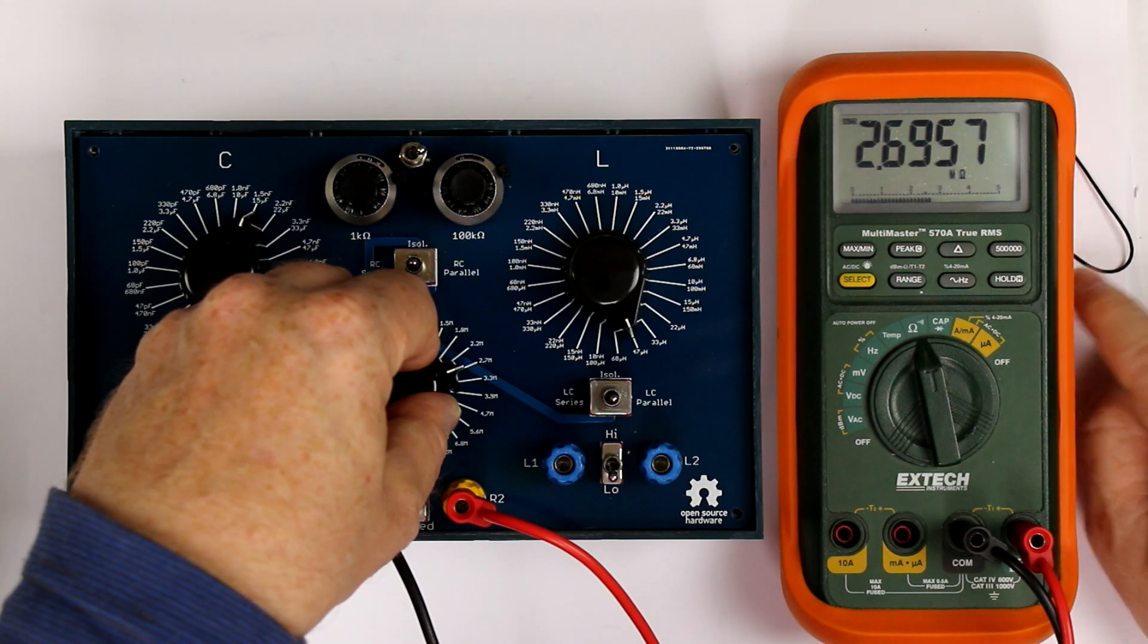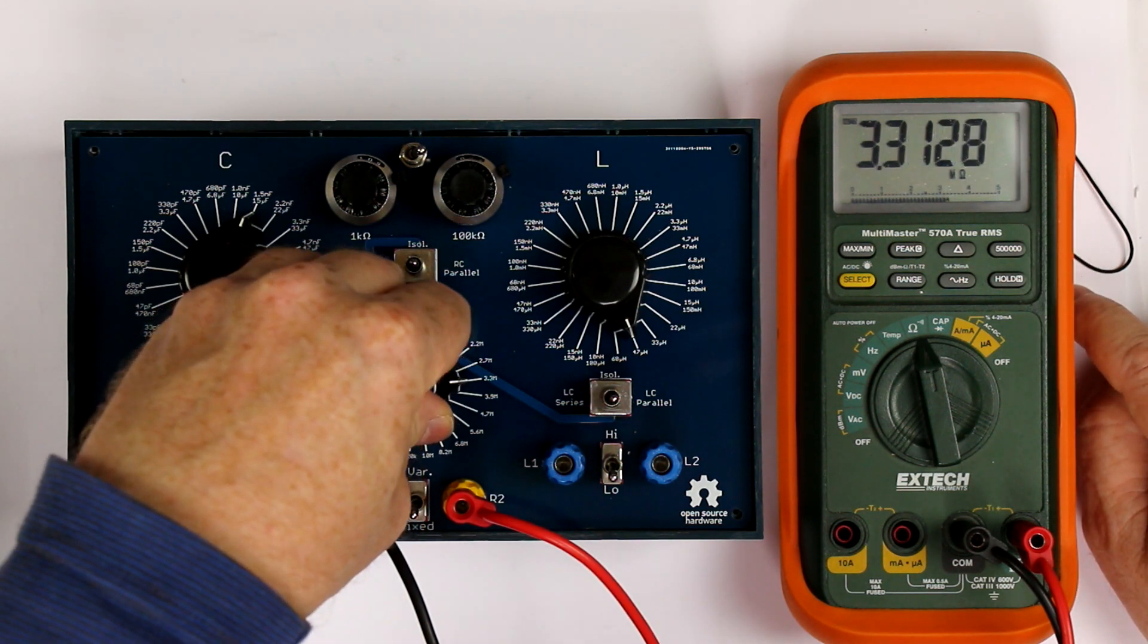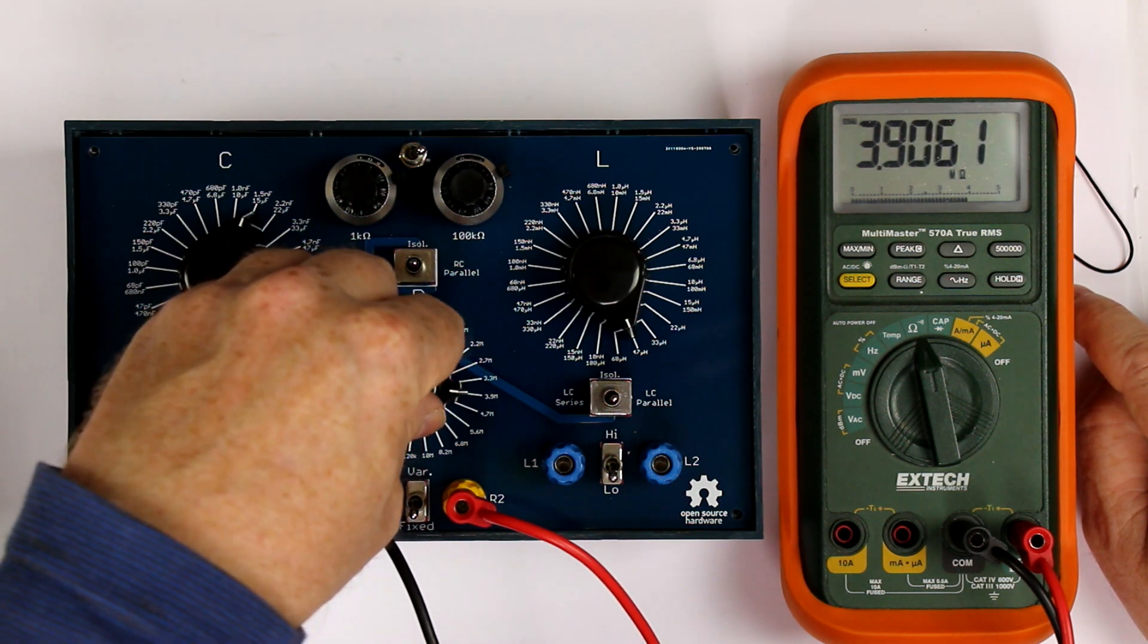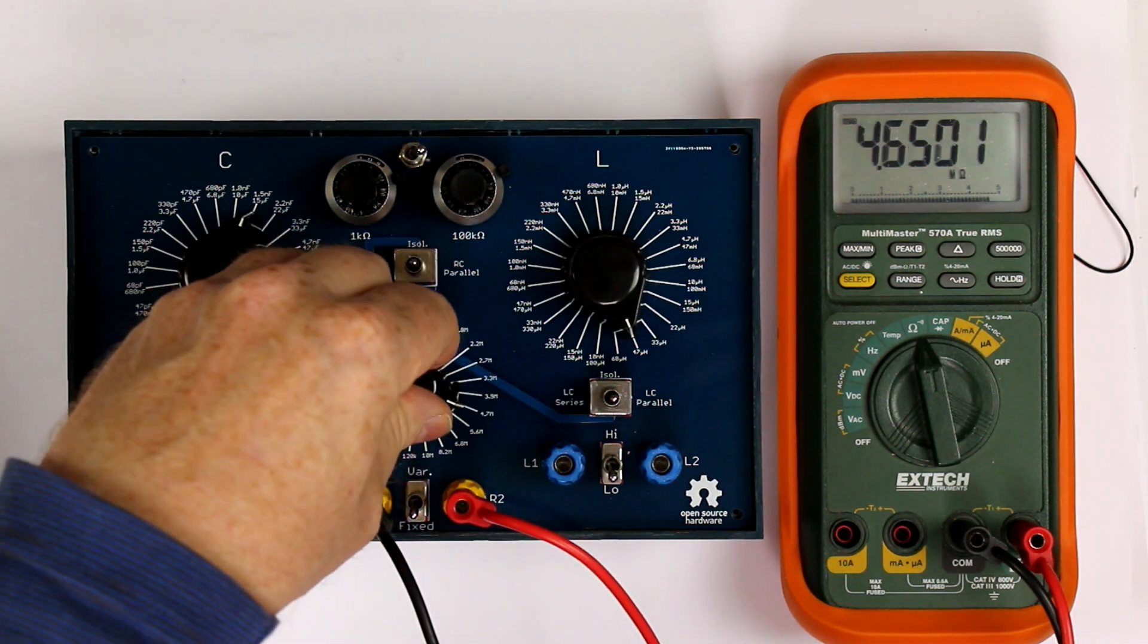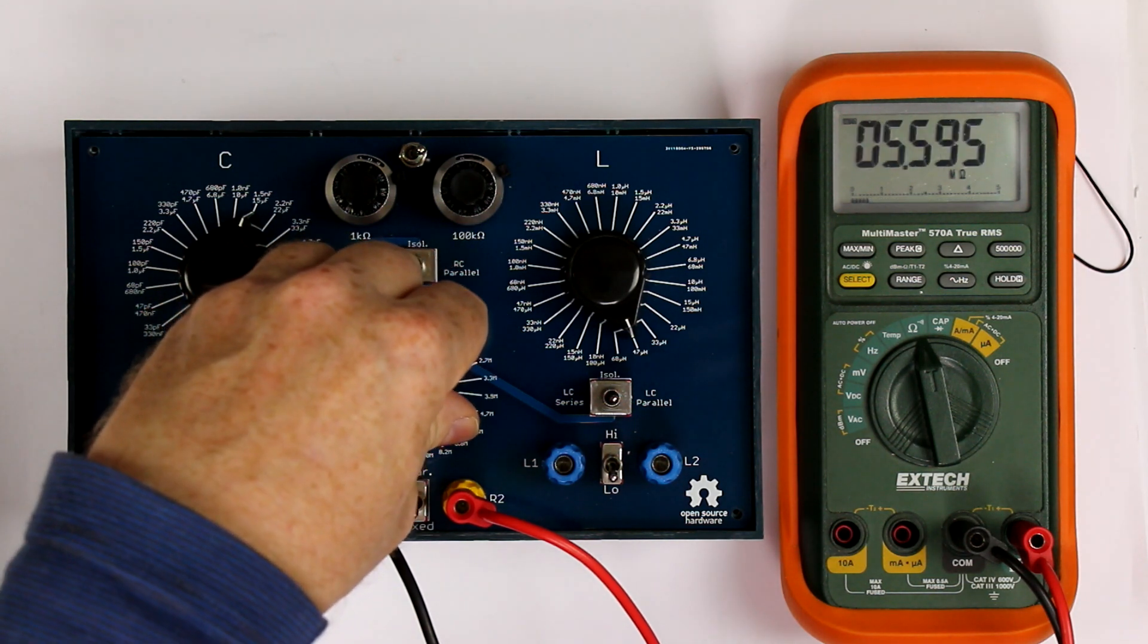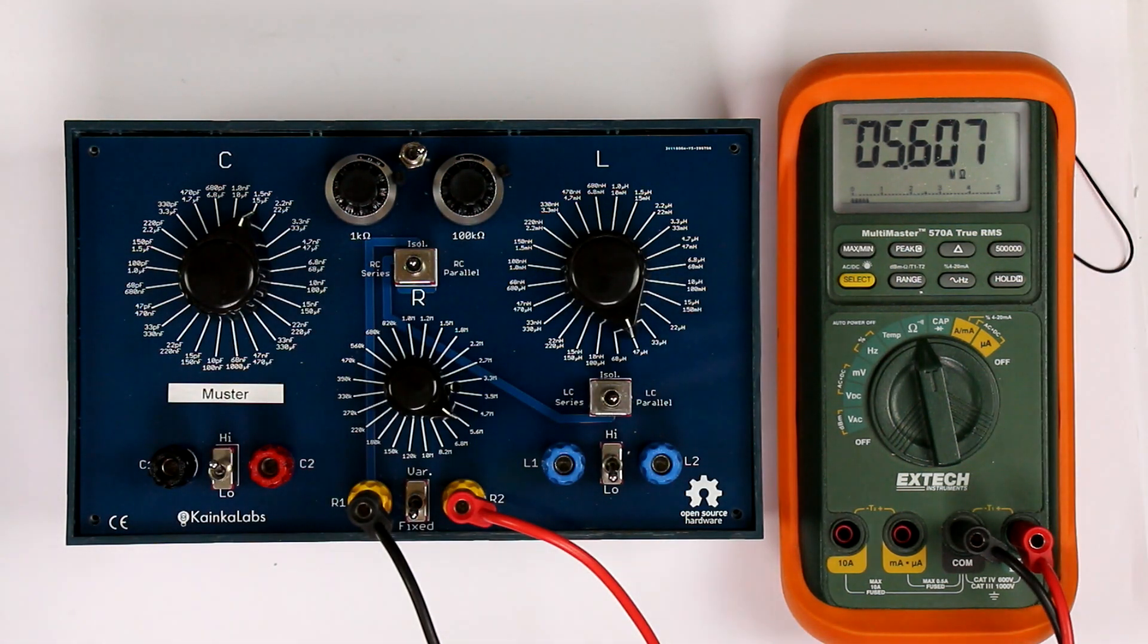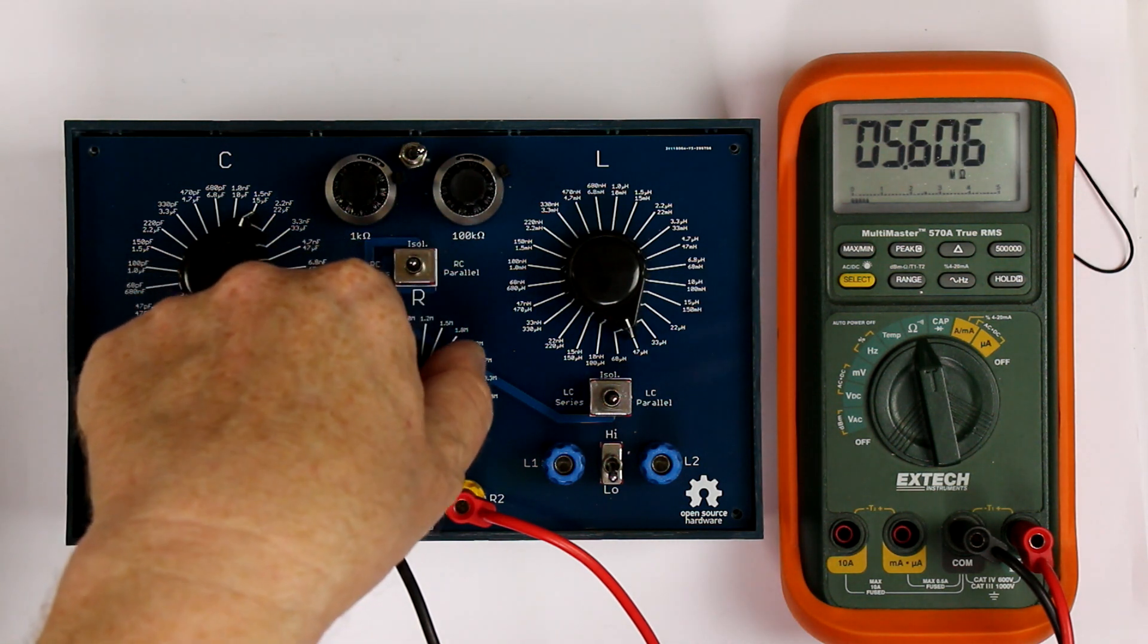So let's start with 2.7 meg, 3.3 meg, and you can see they are consistently more accurate than 1%. 3.9 meg, 4.7 meg, and now of course the range changes because the multimeter has 50,000 counts, just as the EEV block 121 GW.